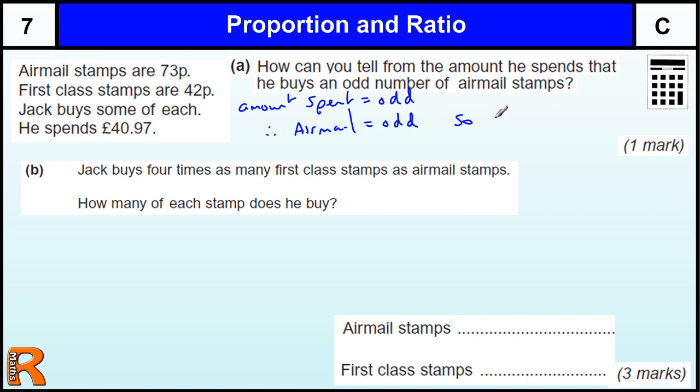So there must be an odd times by the airmail times 73 equals odd. So something along the lines of you having the times by an odd number, 73 by an odd number to keep it an odd number, so that when you add it to the even number of the first class stamps, you get an odd answer.